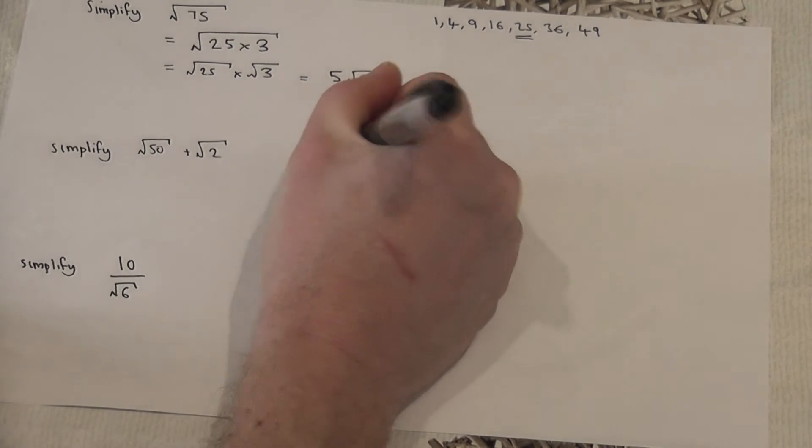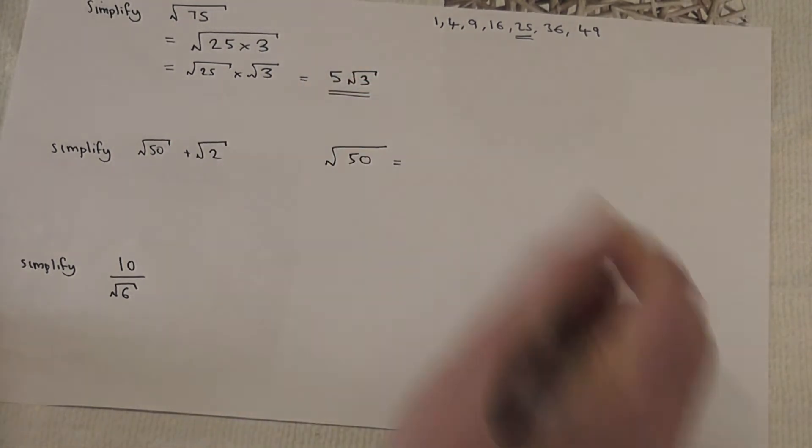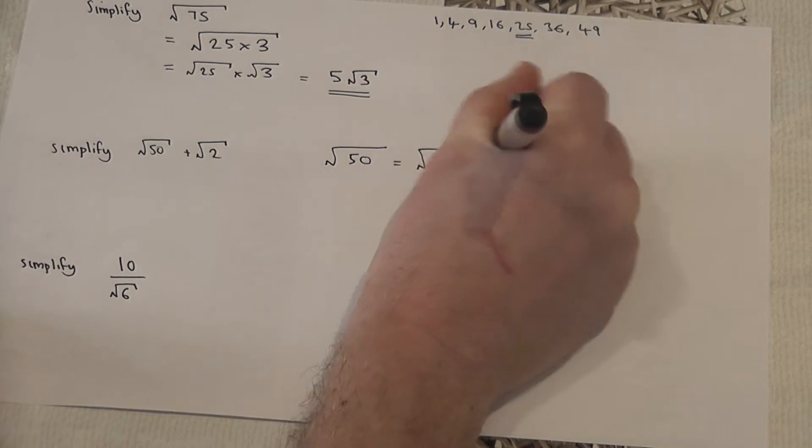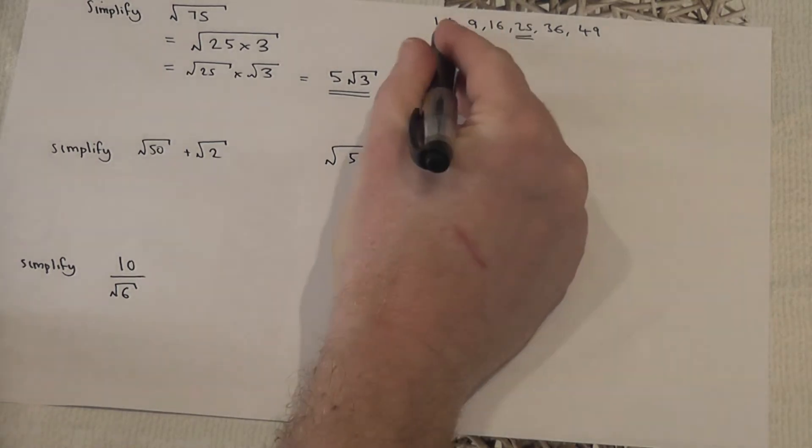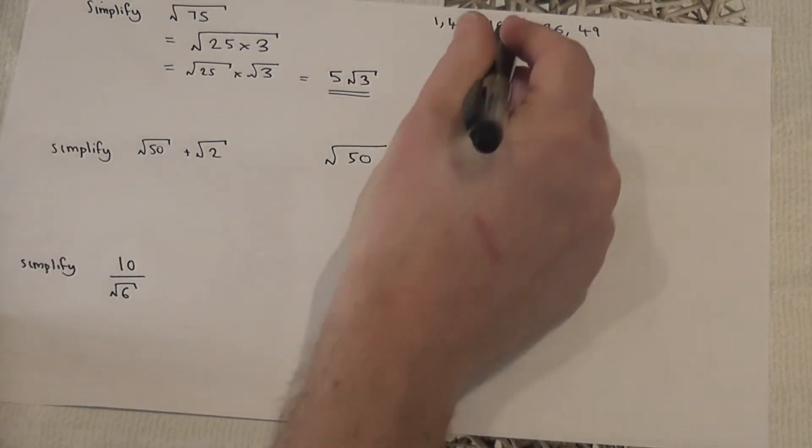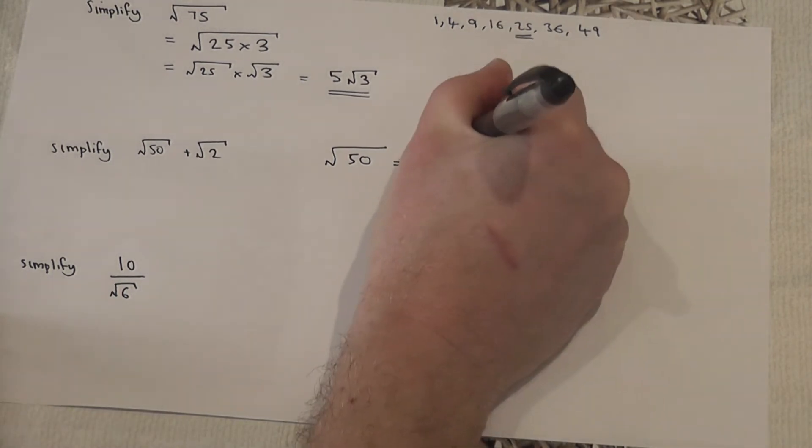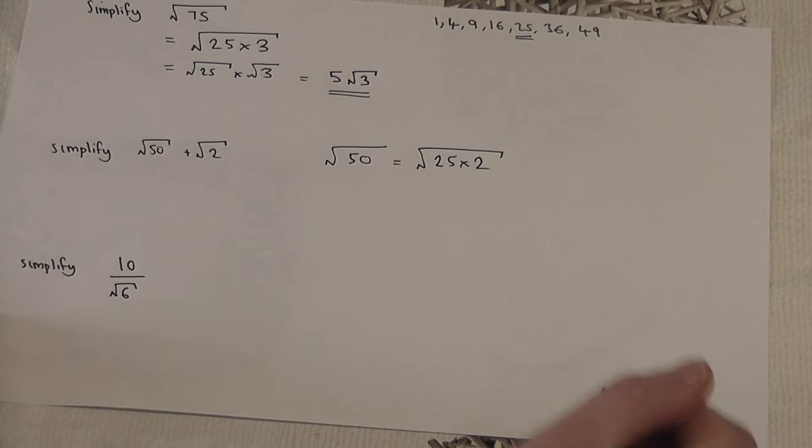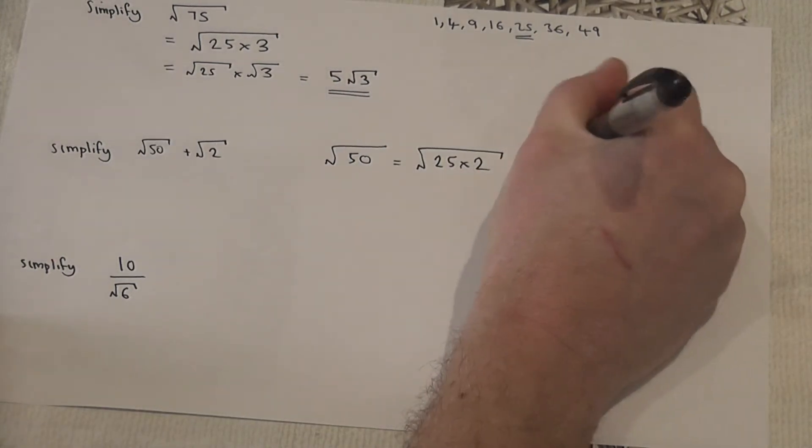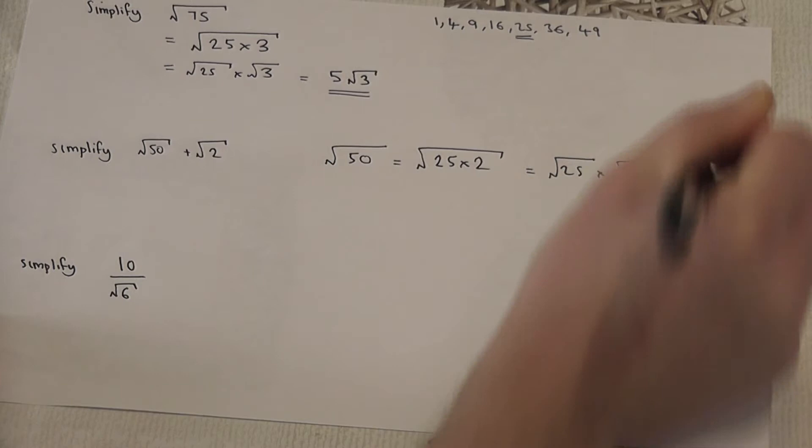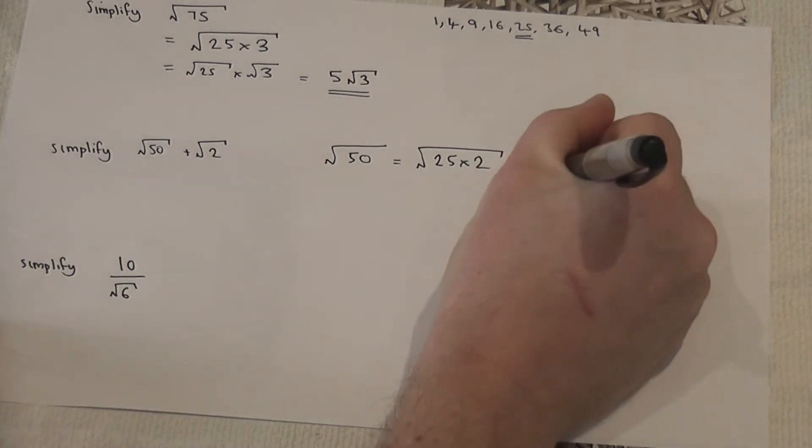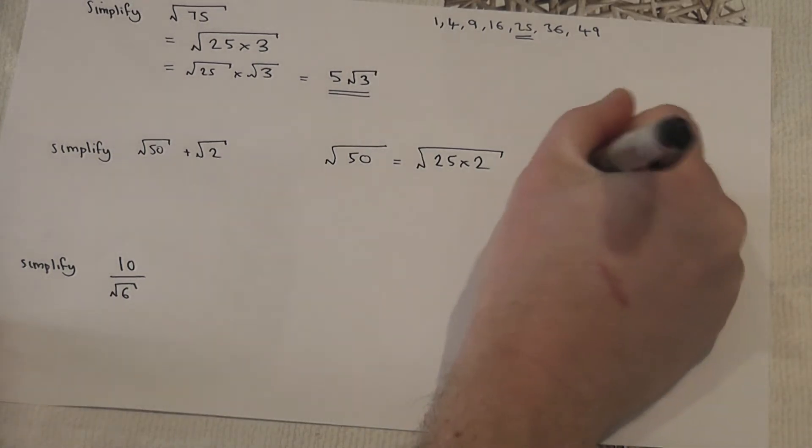So root 50 we know is square root of—the biggest square factor in 50 is again 25, so 25 times by two. Again, try to square both numbers separately, and root 25 is five, so this becomes five root two.